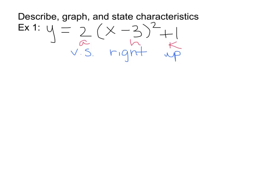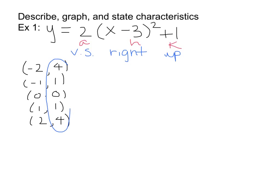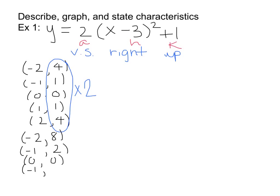In all of these problems, we start with the 5 points from the parent function: negative 2, 4; negative 1, 1; 0, 0; 1, 1; and 2, 4. Those points should be memorized, but if you forget, just plug in negative 2 to positive 2 into x squared. For a vertical stretch, you take only the y part of each point and multiply it by a, which is 2 here. So 4 times 2 is 8, 1 times 2 is 2, 0 times 2 is 0, 1 times 2 is 2, and 4 times 2 is 8. Now I'm going to graph those 5 points.